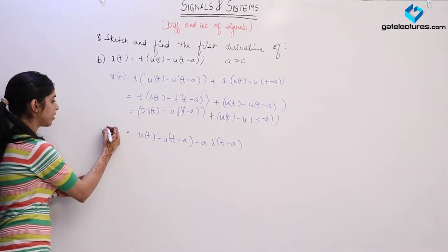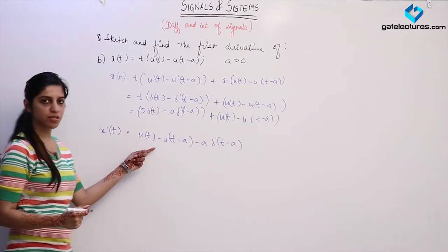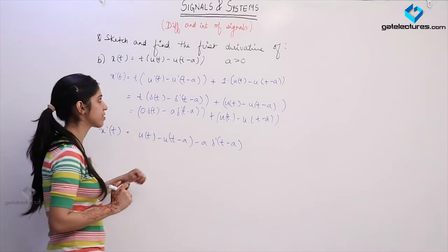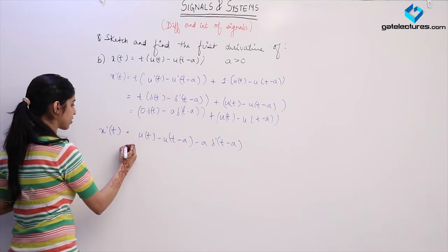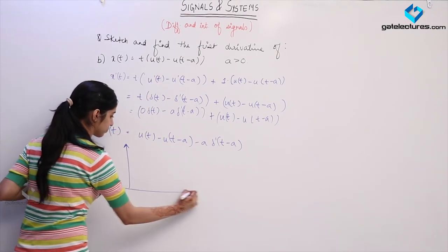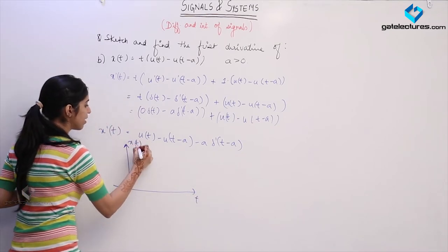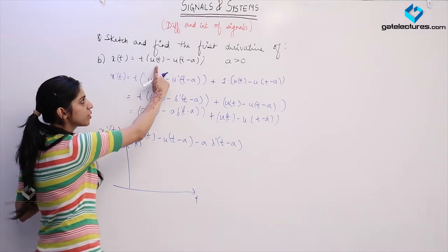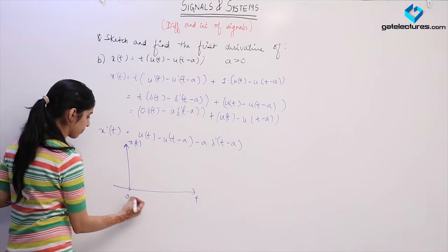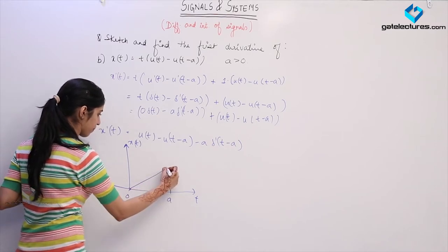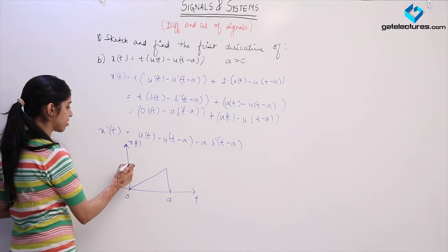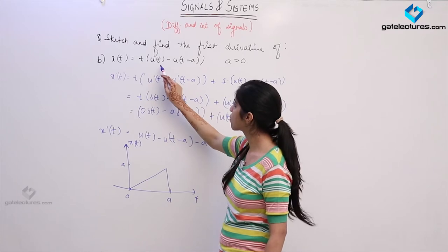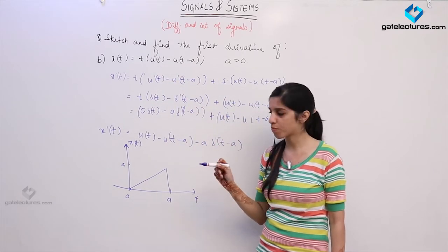So this is going to be the derivative of the given function. Now we represent it graphically and check that the representation is correct. Representing x(t): basically x(t) is a line of slope 1 which lies between t equal to 0 and a. This is how x(t) is going to look like, because u(t) minus u(t minus a) forms a pulse of this kind.